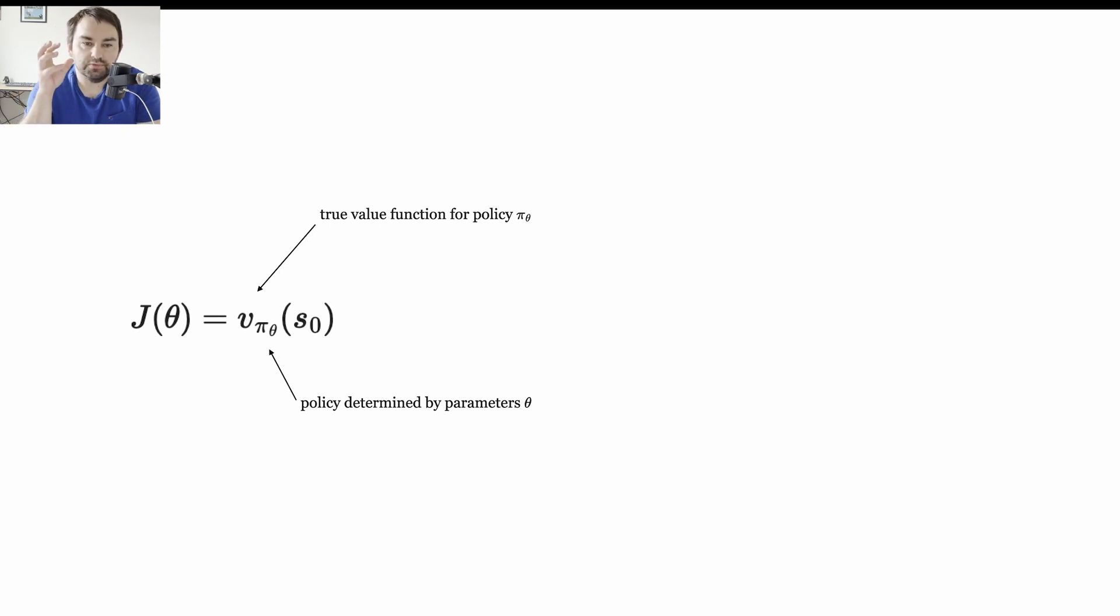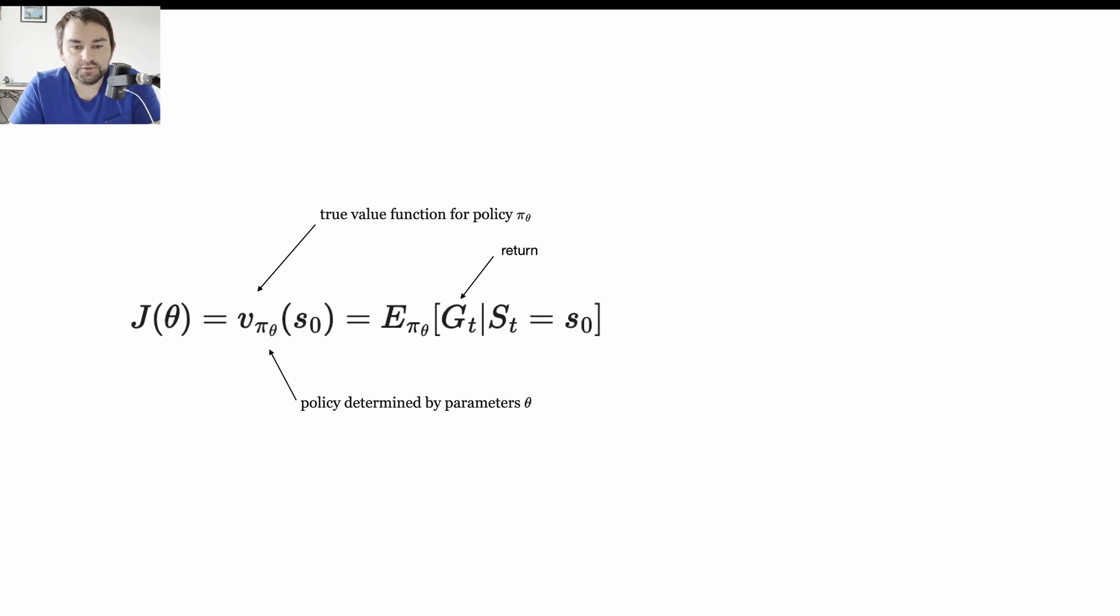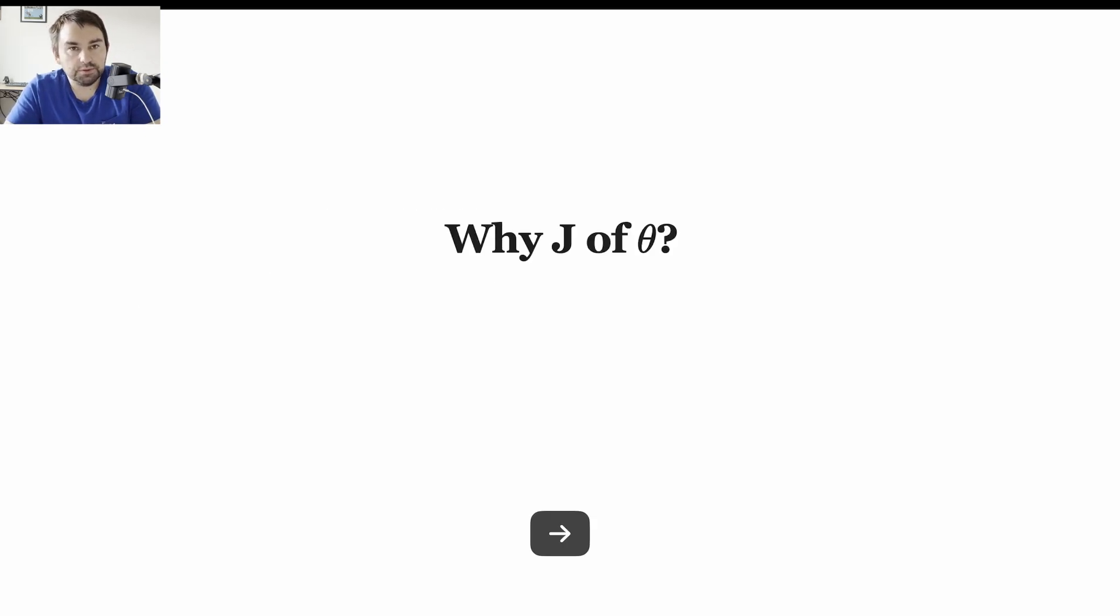The performance measure is something that tells you how well your policy is performing. So in the episodic case, where the task has some end, for example, like drive to some destination, the definition of the performance measure is simply the value of the start state under this parameterized policy, π of θ. So meaning if we start in some state, S0, for example, and we measure the value at that state when using our policy, then this is our performance measure. So what is the value here? Well, the value here is just the expected return G when starting in this state and following the policy thereafter. And of course, the return is simply sum of all the rewards until the end of the episode.